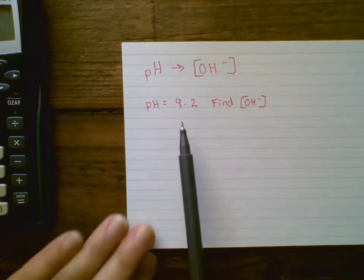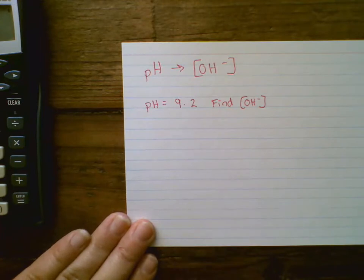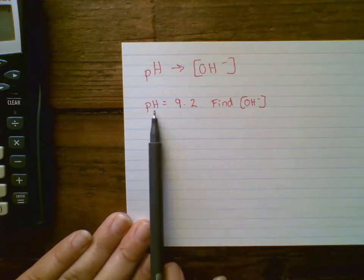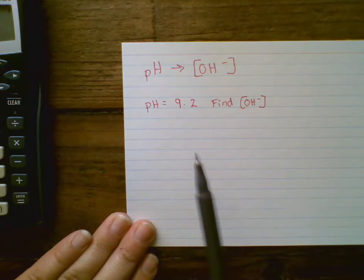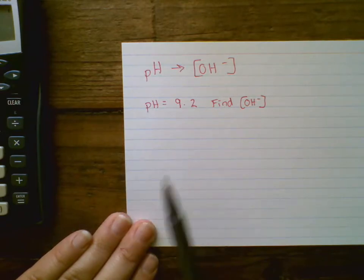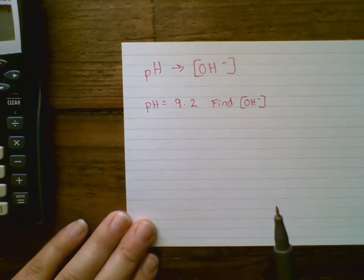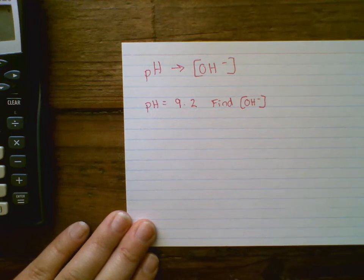So in order to do this, there are two steps we need to complete. The first step is we need to change this pH into a pOH and then we can use the calculation where we go from pOH to OH-. Both steps are important. You can't skip a step, you have to go in order.